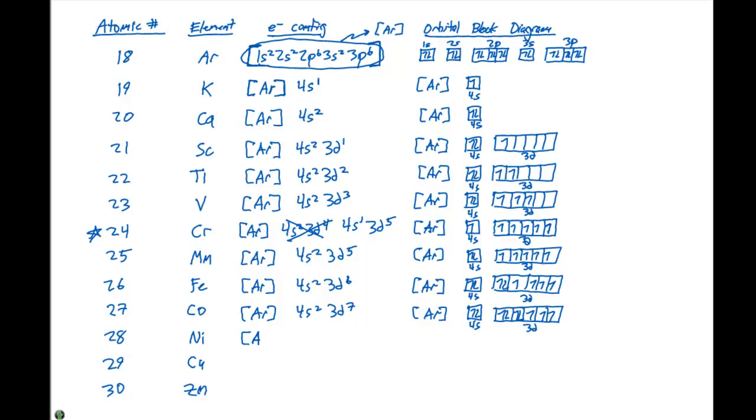For nickel, we have our argon configuration. It's gonna be 4s2, 3d8. So, we have our argon noble gas core. The 4s orbital is filled with two electrons. And we need to put eight electrons in the d orbitals. So, this is gonna have two unpaired electrons in a nickel atom.